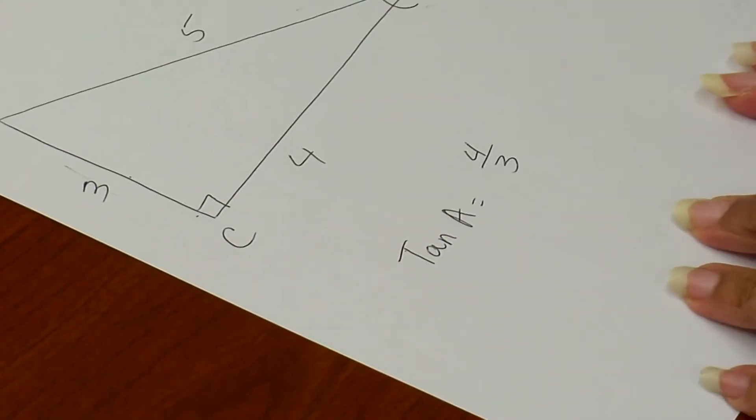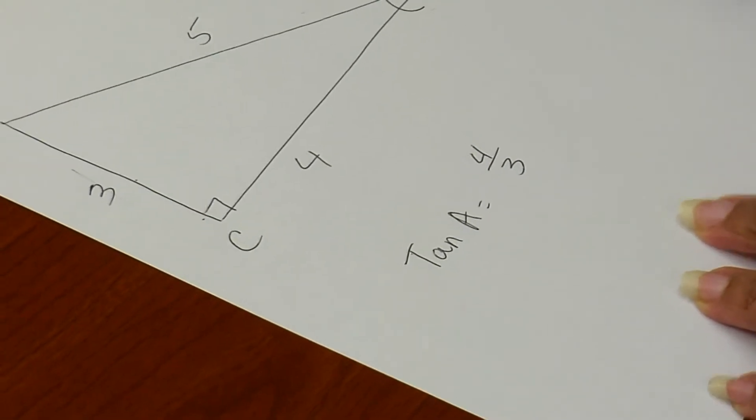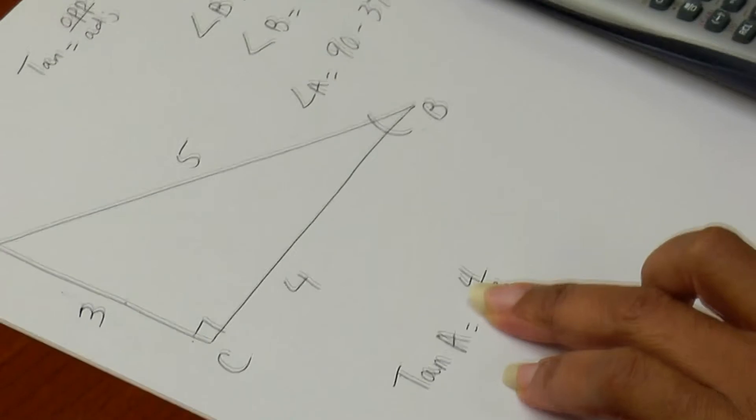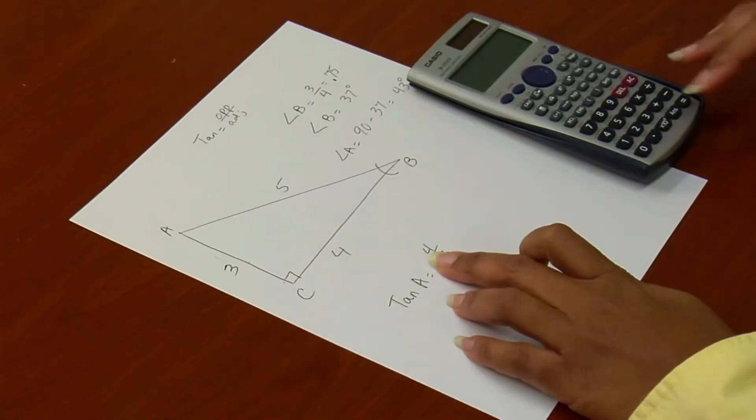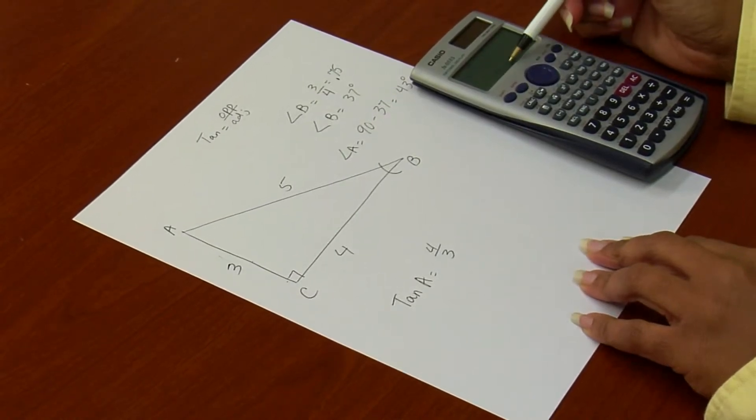Again, using my inverse key because I want the degree of that angle. Second, tan, 4 divided by 3. That gives me a decimal value, degree angle, 53.1.